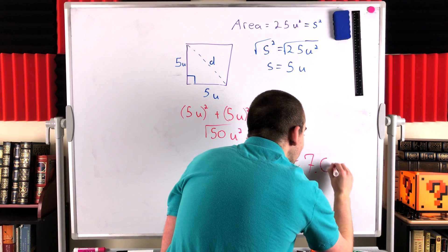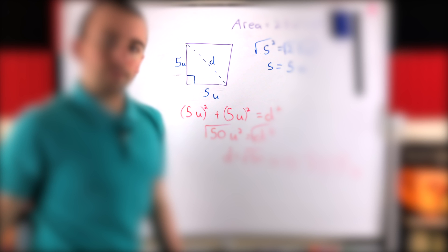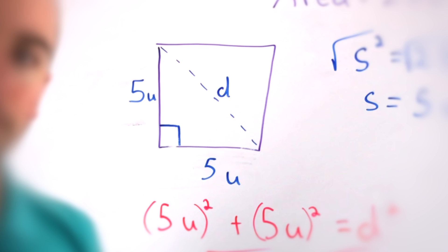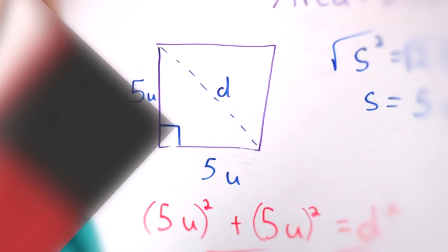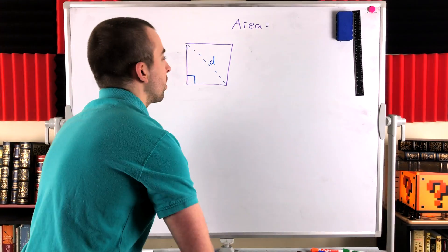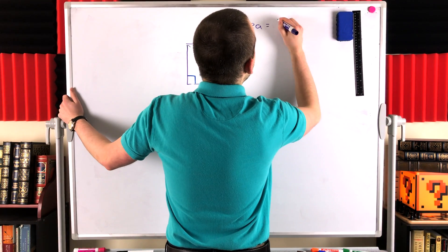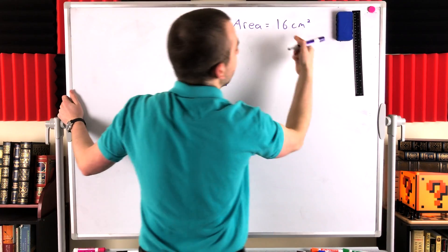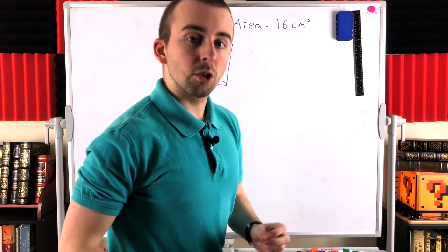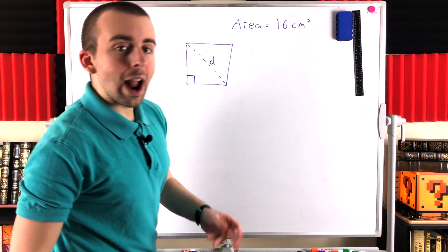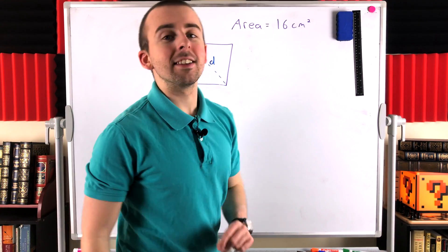Just pausing here to point out that this same exact procedure would give us the same result if we were trying to find the other diagonal of the square — the one that goes the other way. Alright, on to the rest of the lesson. I want you to try this one on your own before watching the solution. Let's say we're given that the area of the square is 16 centimeters squared. Go ahead and solve this problem just like we did before to find the diagonal of a square with an area of 16 centimeters squared.